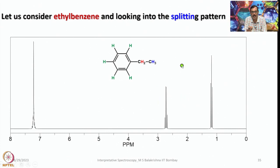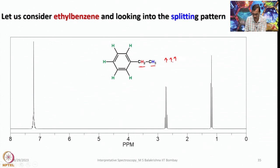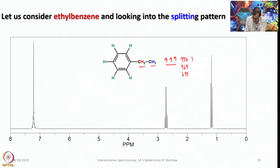To explain why CH2 gives a quartet: there are three protons on the adjacent CH3. Representing all three orientations — situation 1 is all aligned with the magnetic field; situation 2 has two aligned and one opposing (three permutations of this); situation 3 has one aligned and two opposing (three permutations); and situation 4 has all opposing the applied magnetic field. This gives four peaks with relative intensities 1:3:3:1.